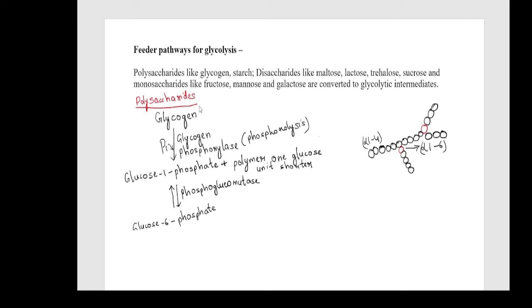First let's see how glycogen can be converted into glycolytic intermediates. Glycogen is a branched polymer of glucose. Glucose residues are linearly linked by alpha-1,4 glycosidic bonds and for every few glucose residues the chain branches off via alpha-1,6 glycosidic bonds.